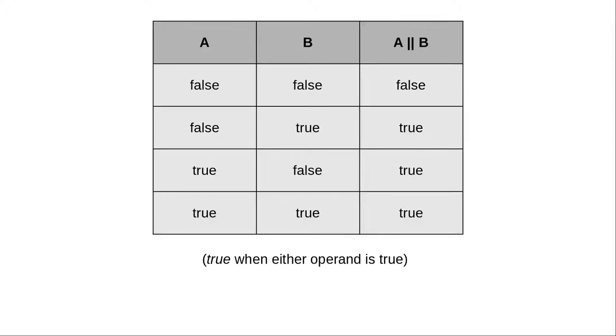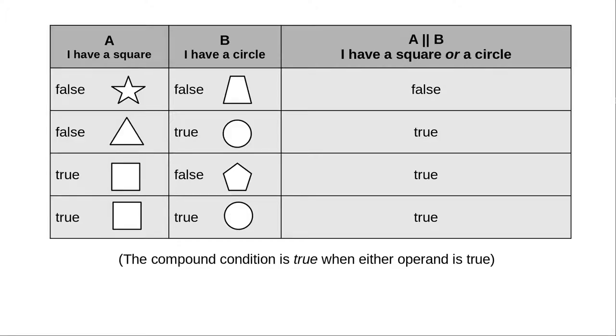Here's the truth table for OR. And here's a concrete example with the squares and circles. The only part that seems weird to people is this last case, where both A and B are true. If you have both, you still have at least one of them, so this turns out to be true.